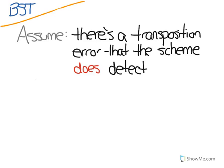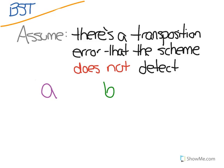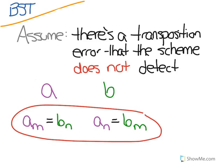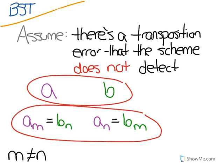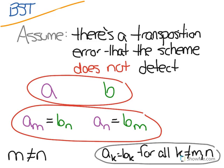So let's start off by making our assumption, which is what we do in proof by contradiction. We'll assume that there is a transposition error that the scheme does not detect. So we're assuming that we have two 10-digit numbers, a and b, that are identical, except that a sub m, the mth digit of the number a, equals b sub n, and a sub n equals b sub m. And this just means that the m and nth digits are switched in these two numbers. And we're assuming that m does not equal n, and that a sub k equals b sub k for all k that aren't m and n.